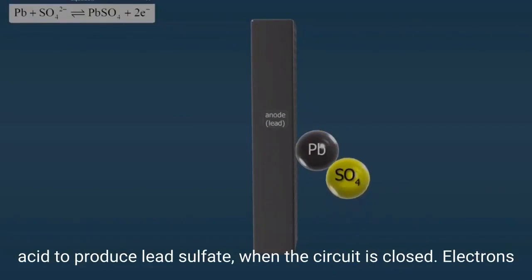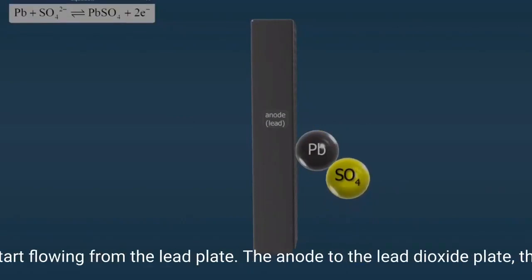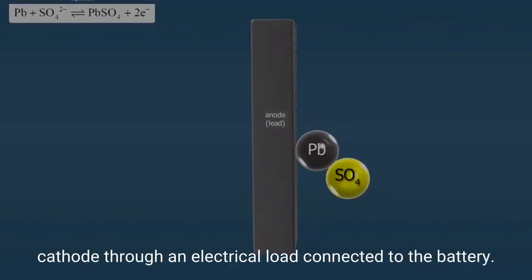When the circuit is closed, electrons start flowing from the lead plate (the anode) to the lead dioxide plate (the cathode) through an electrical load connected to the battery.